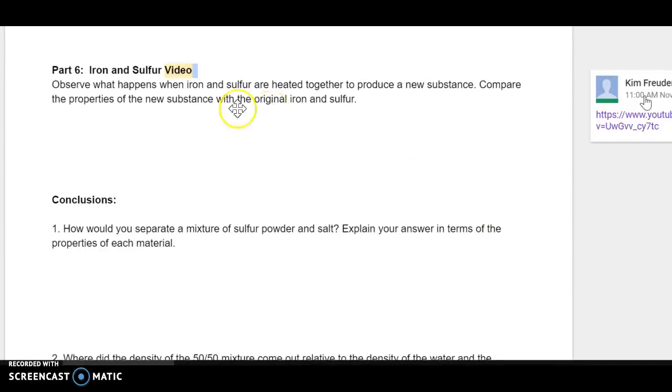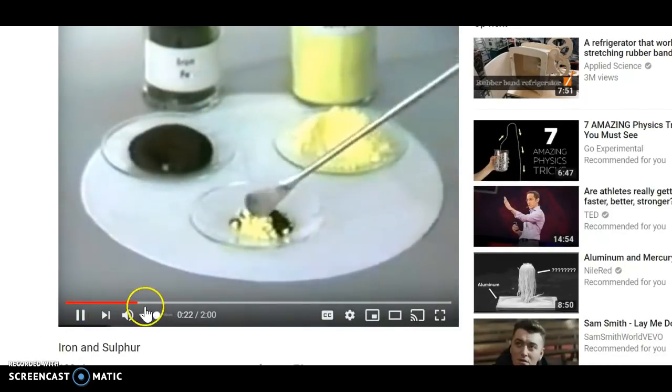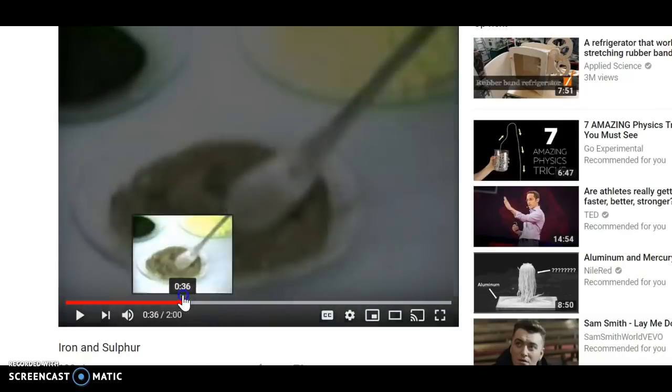On the next page is part six, which is iron and sulfur. So if you remember, in the lab, we mixed the yellow sulfur powder and the iron filings. And then we were able to separate those back out with a magnet. Kind of like this little video. It's kind of boring, whatever, they mix it.